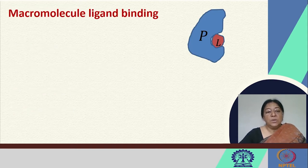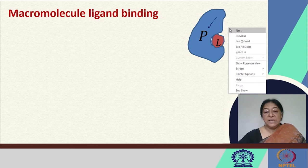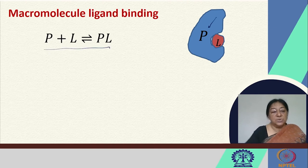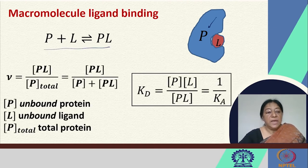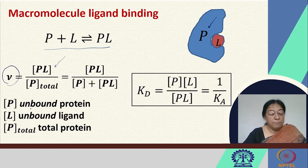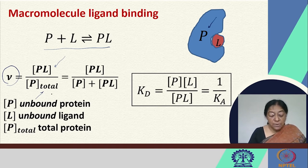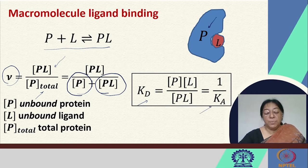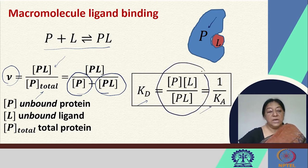When we look at macromolecule-ligand binding, we have our protein and our ligand. We look at the equilibrium associated with this association. Then we have our nu factor — the concentration of the protein-ligand complex divided by the total amount of protein. The total protein is either in the free form or bound form. From this, we can get the dissociation constant or the association constant, depending upon how we write our equilibrium condition.